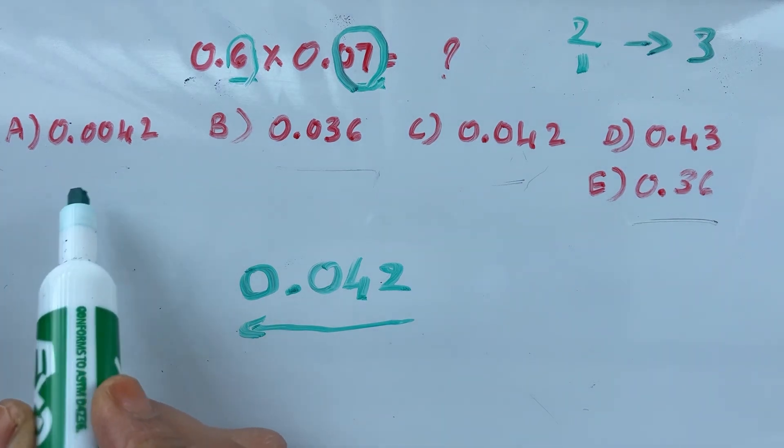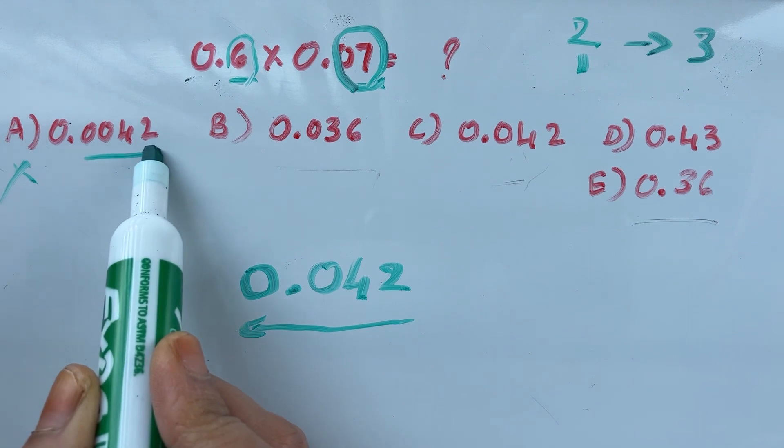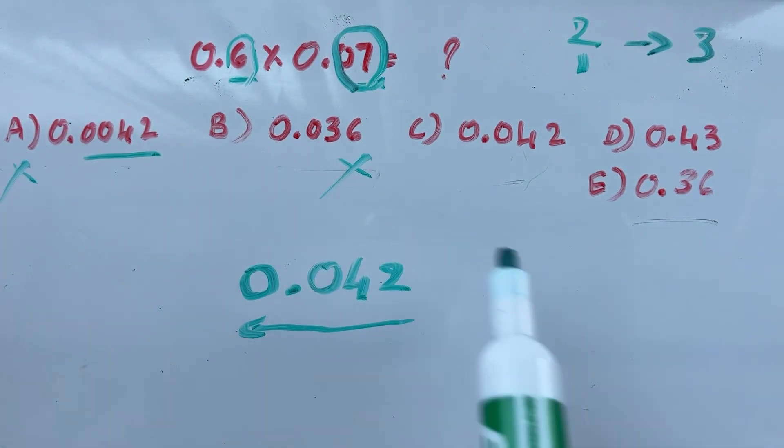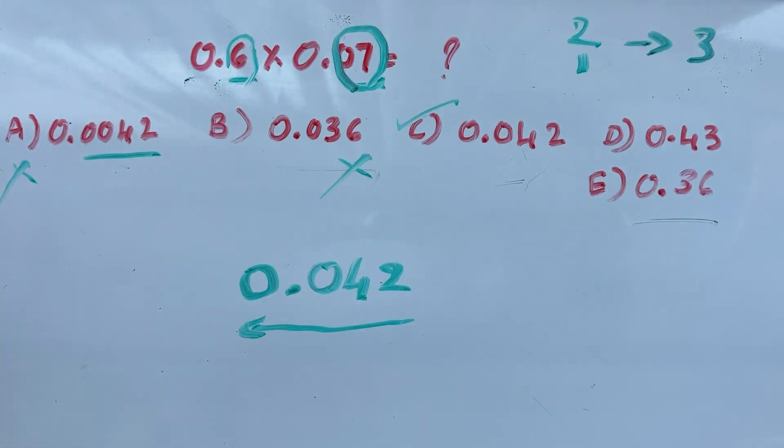So option A is not the correct option because you have four digits. Option B is not correct. Option C is the correct option: 0.042. See you in the next video. Bye!